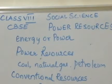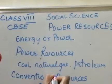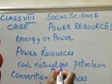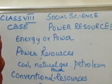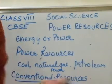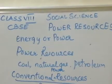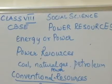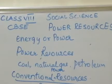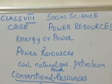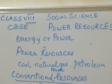When we say conventional power resources, these are resources that have been in use for a long period of time. They have limited reserves and are exhaustible in nature. Examples include coal, petroleum, natural gas, firewood, and hydel power.